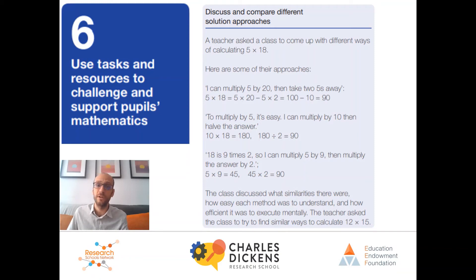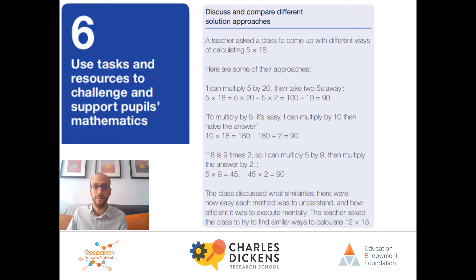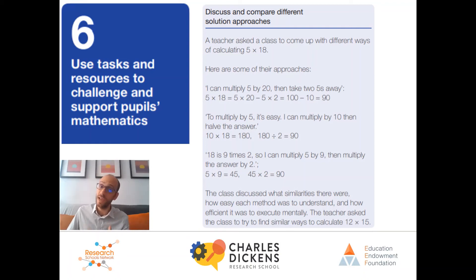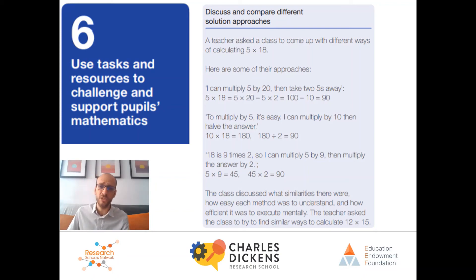A teacher asked the class to come up with different ways of calculating 5 times 18. One approach: multiply 5 by 20 then take two fives away — 5×20 − 5×2 = 100 − 10 = 90. Another approach: multiplying by 5 is easy if you multiply by 10 then halve the answer — 10×18 = 180, 180÷2 = 90. Another approach: 18 is 9 times 2, so multiply 5 by 9 then multiply by 2 — 5×9 = 45, 45×2 = 90. The class discussed similarities, how easy each method was to understand, and how efficient it was to execute mentally. The teacher then asked the class to find similar ways to calculate 12 times 15.